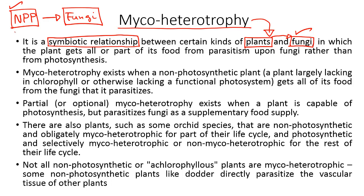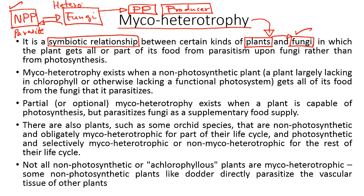This non-photosynthetic plant acts as a parasite to draw energy and nutrients by depending directly upon a fungus. And this fungus in return is dependent upon a photosynthetic plant or a producer, because fungi belongs to the category of heterotrophs. Fungi depends upon a photosynthetic plant for drawing energy and nutrients, and in return the non-photosynthetic plant draws energy and nutrients from the fungi. This relationship is known as myco-heterotrophy — a non-photosynthetic plant being dependent upon fungus for drawing energy and nutrients.